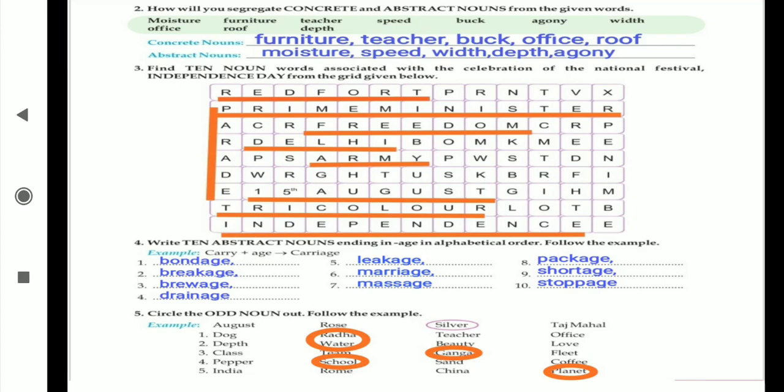First example is given: carry plus age equals carriage, C-A-R-R-Y, 'age' as suffix we are going to add to that main word. Then the next word is created as abstract noun: carriage, C-A-R-R-I-A-G-E.